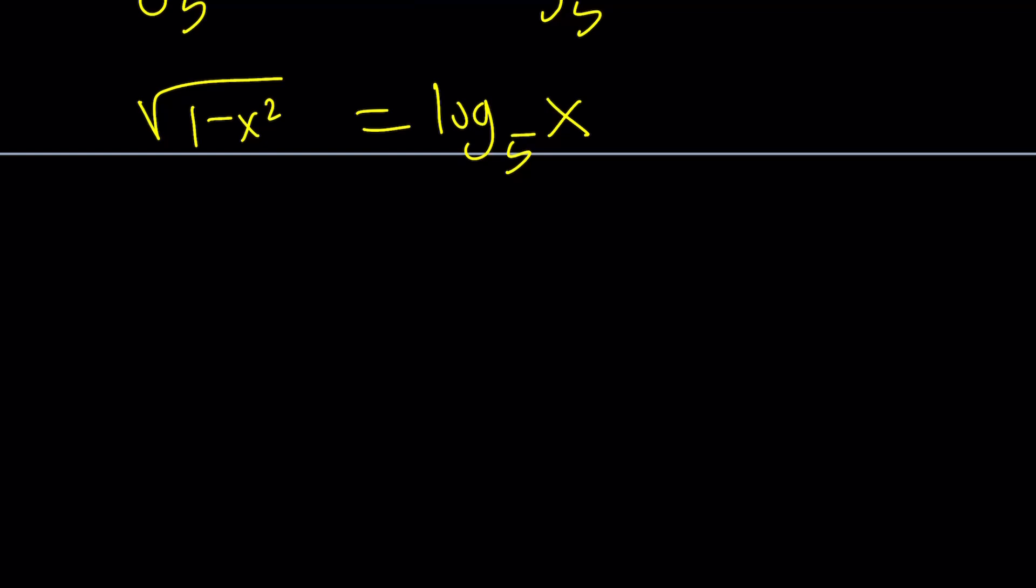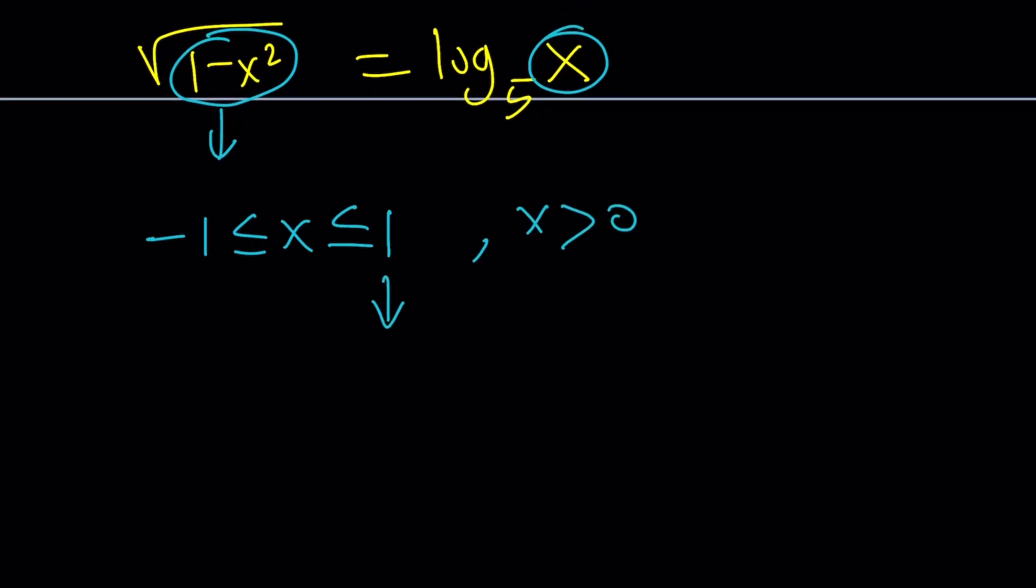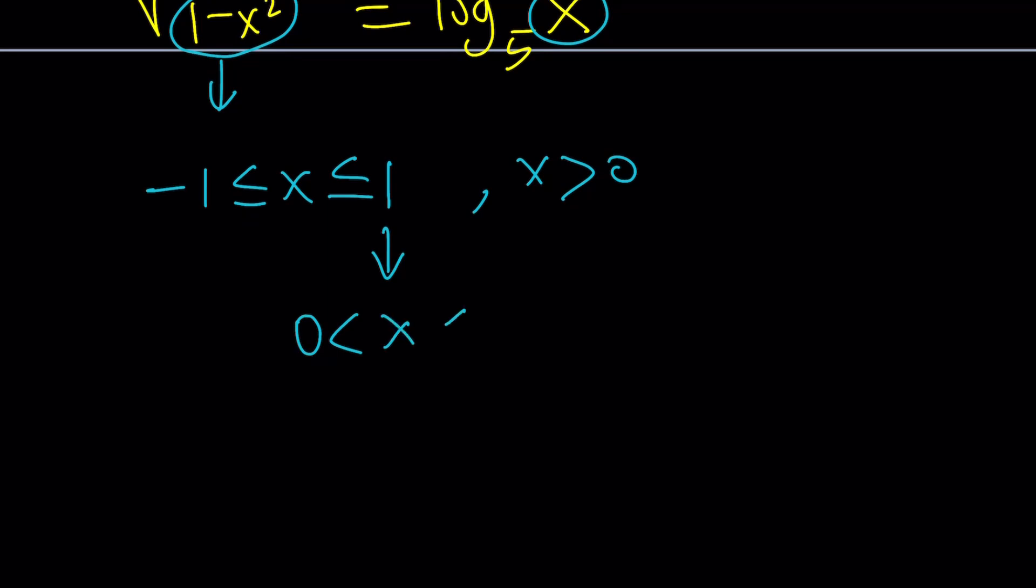So we have the square root of 1 minus x squared. That tells us that whatever is inside the radical needs to be greater than or equal to 0. In other words, x needs to be between negative 1 and positive 1, inclusive, right? And of course, because of this, x needs to be positive. So if you go ahead and find a common domain for these functions, you're going to get something like this. x needs to be between 0 and 1 where 1 is included but 0 isn't because log 0 is undefined in any domain, even in the complex world, right?